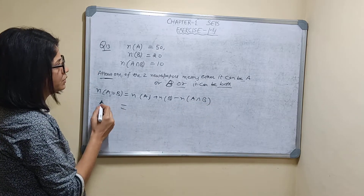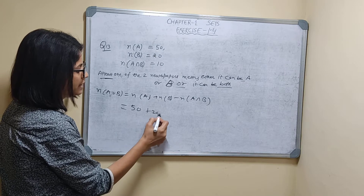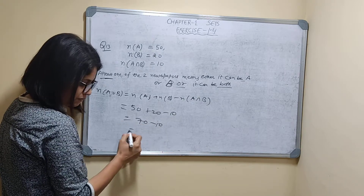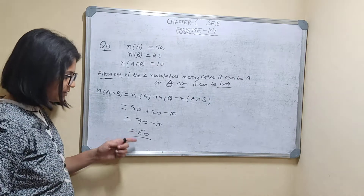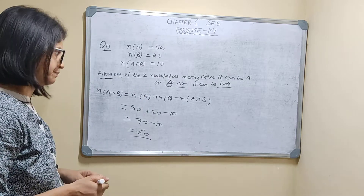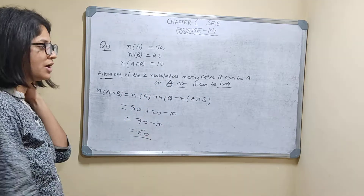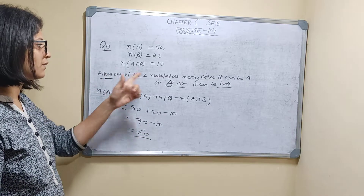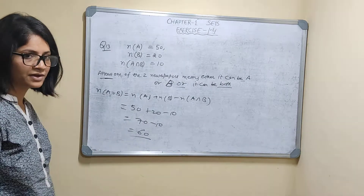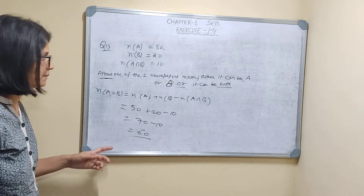n(A ∪ B) is equal to 50 plus 20 minus 10. That is 70 minus 10, which is 60. So 60 people can read newspaper A, or newspaper B, or both. At least 60 people can read one of the two newspapers.